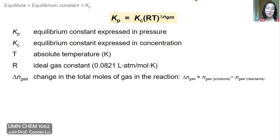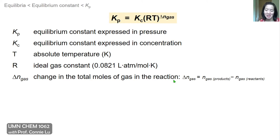The two equilibrium constants Kp and Kc are related by this equation: Kp equals Kc times R times T raised to the delta N of gas. R is the ideal gas constant, T is temperature, and delta N of gas is the change in the total moles of gas in the chemical reaction. Delta N can be calculated by taking the moles of gas that are products minus the moles of gas that are reactants.